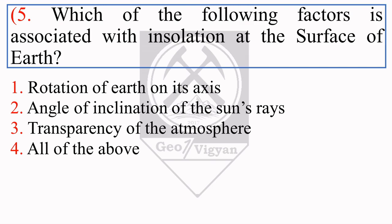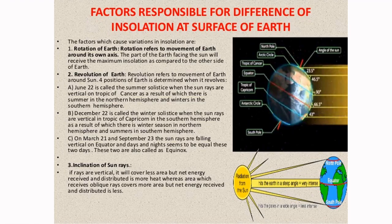The next question is: which of the following factors is associated with insolation at the surface of the earth? What is insolation? The total amount of energy received by the earth from the sun is called insolation. The factors associated are: rotation of earth on its axis, angle of inclination of the sun's rays, and transparency of the atmosphere — so the right answer is all of the above. Factors causing variations in insolation include rotation of earth, revolution of earth, and inclination of sun rays.